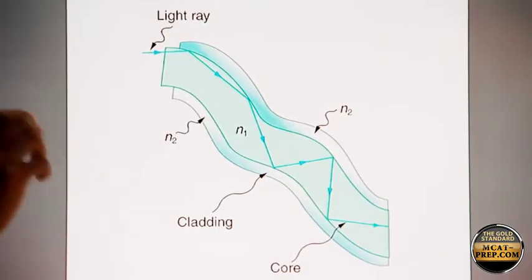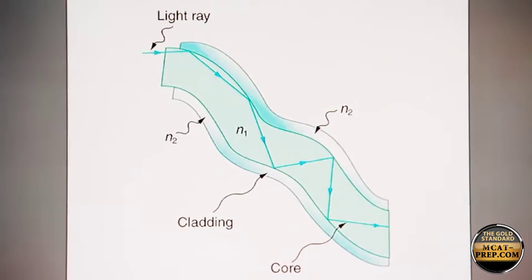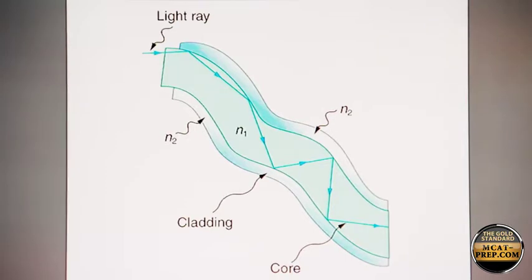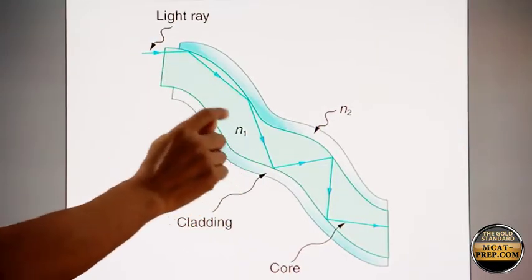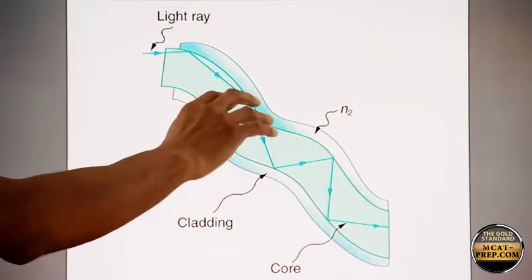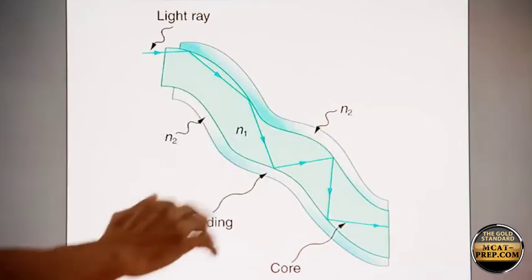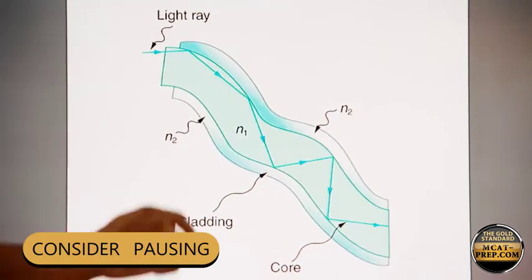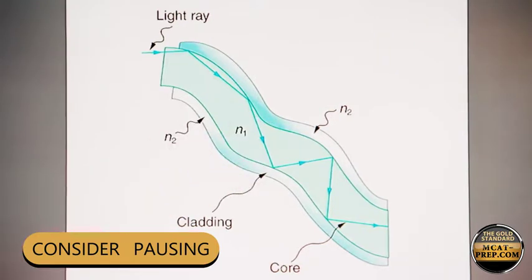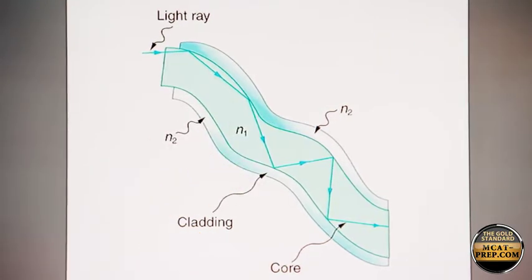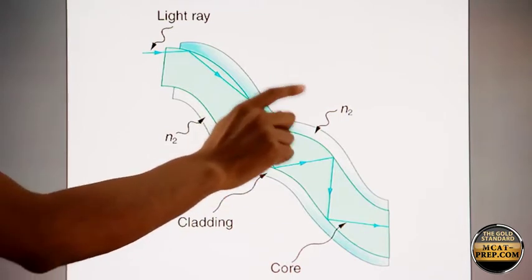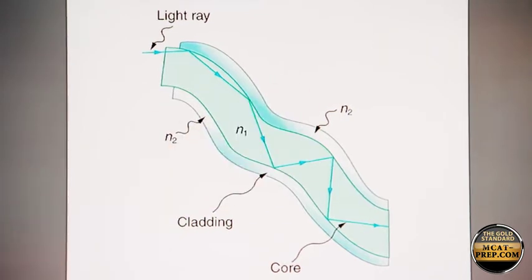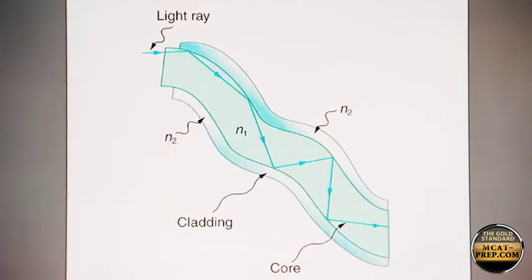So the key part in terms of the physics, and you may want to pause to just consider your answer, is the core has an index of refraction, N1, and the cladding, the outside, N2. So consider your answer, and then come back.